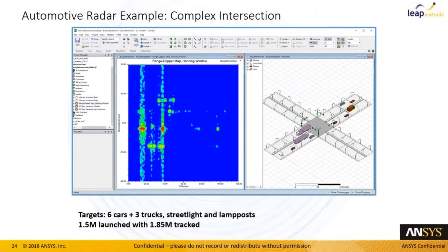Once this is done, we apply a Fourier transformation and create a range profile. On the X axis you see the different range values and the corresponding magnitude. To expand that into the velocity axis on the Y axis, we run the scenario at time t and then again at a second time step where we move the objects according to their intended velocity.